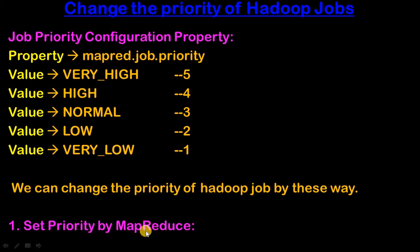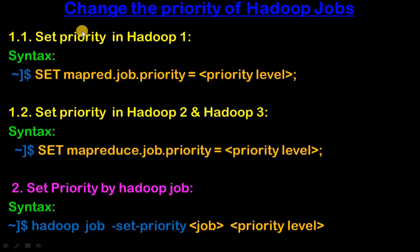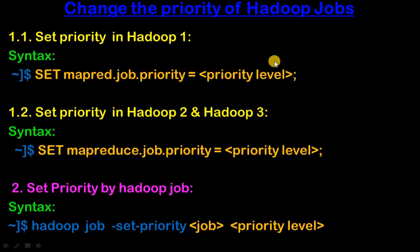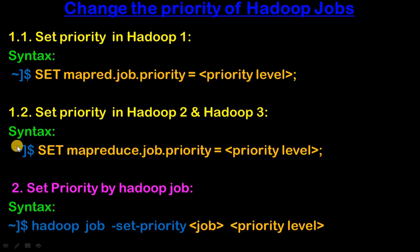There are two ways to set priority. First is by MapReduce. In Hadoop 1, the syntax is: mapred.job.priority = PRIORITY_LABEL. In Hadoop 2 and Hadoop 3, the syntax changes slightly — you replace 'mapred' with 'mapreduce', so the syntax becomes: set mapreduce.job.priority = PRIORITY_LEVEL. This is how we set the priority label in Hadoop 2 and Hadoop 3.